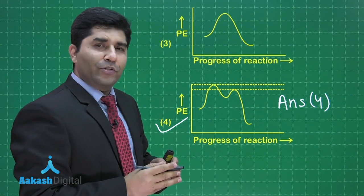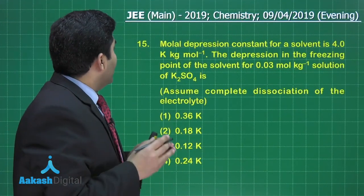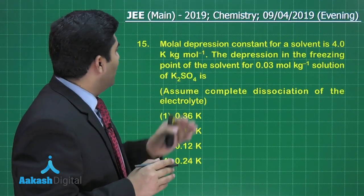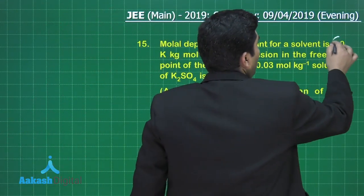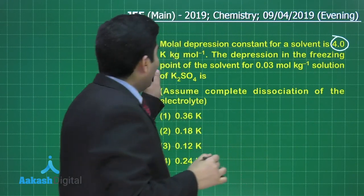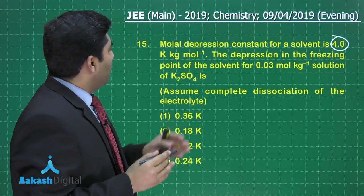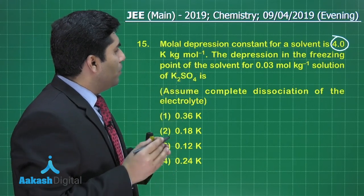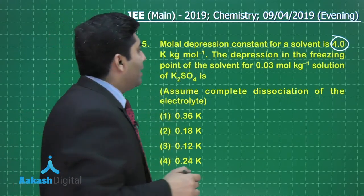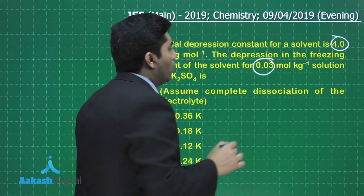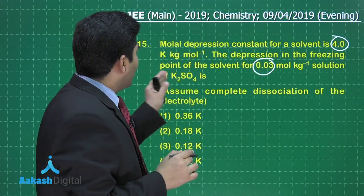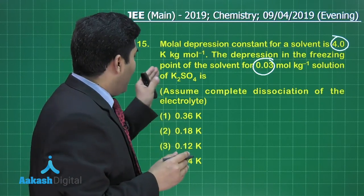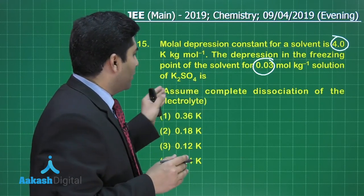Let us move on to the next question. In this question, he is asking, molal depression constant of a solvent is 4 means Kf is given to us and that is equal to 4 Kelvin kg per mole. The depression in the freezing point of the solvent 0.03 mole per kg. Molality is given to us 0.03. Solution of K2SO4 is.